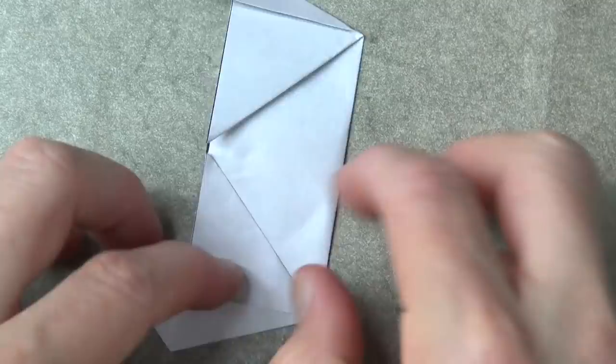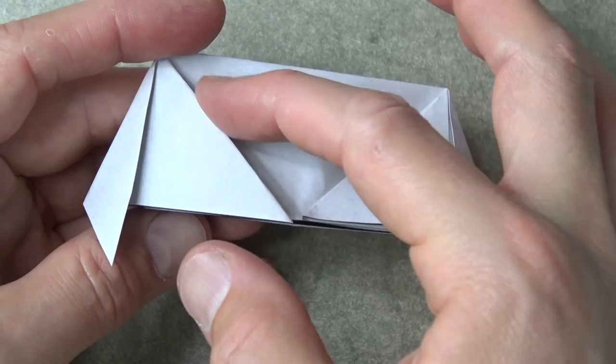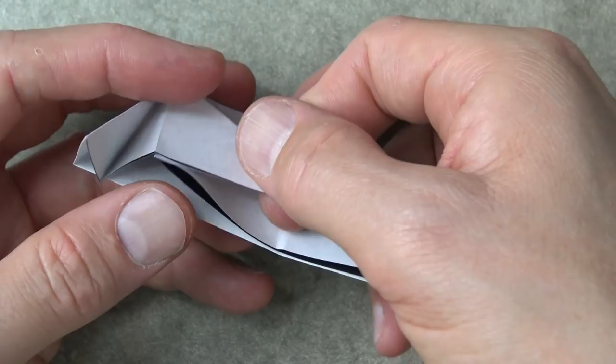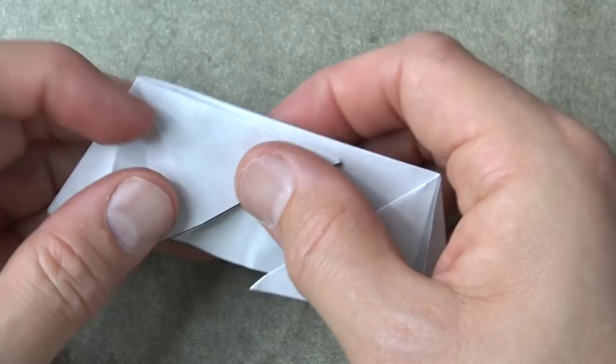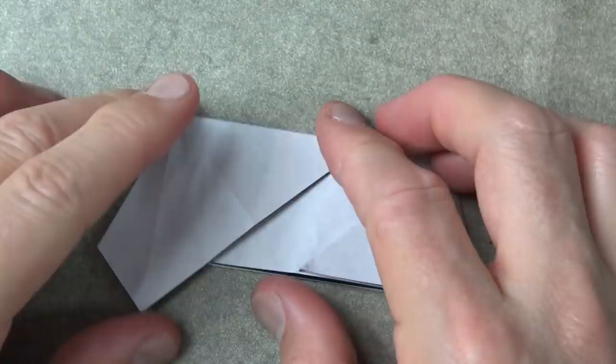Okay, now comes a tricky step. Where the black pocket is, we're going to pull this flap out and pull this edge so that it aligns with this edge. So pull it out and that flap comes out there, make the two edges align and flatten, and we're making a new fold right there. So that's what it looks like.